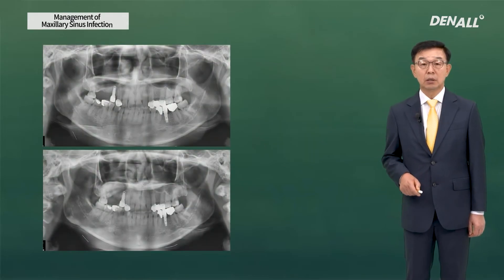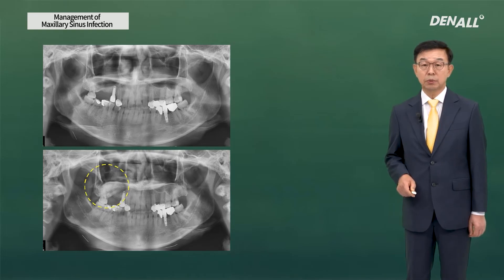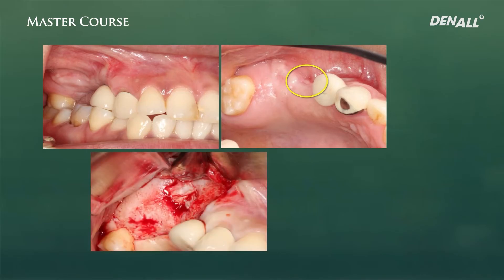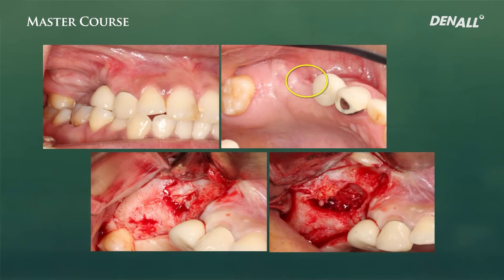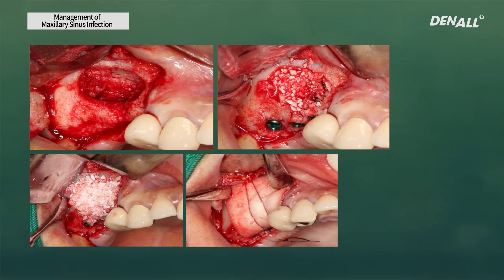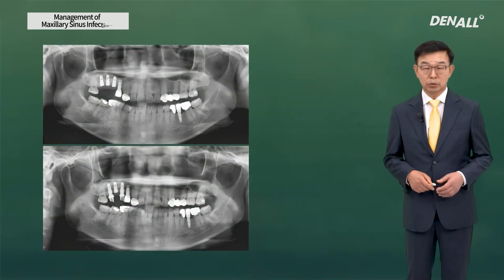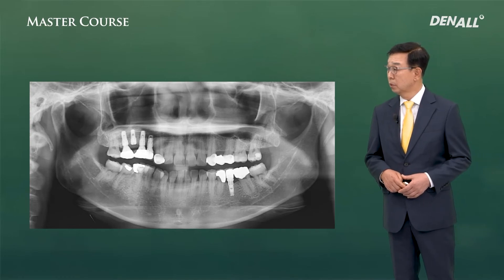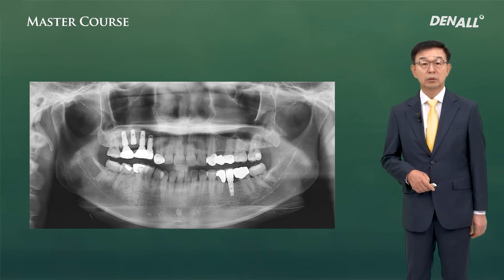In the case of this patient, who received lateral window approach in the upper right posterior area, there was infection from early on and medication was prescribed. However, 5 months after surgery, fistula was visible. The patient came to my hospital, and after incision in the fistula area, granulation tissue was found and removed thoroughly. The sinus membrane was in sound condition. Detoxification was done, additional bone grafting was performed, and implant was placed. After final prosthesis was delivered, the x-ray shows it functions well.